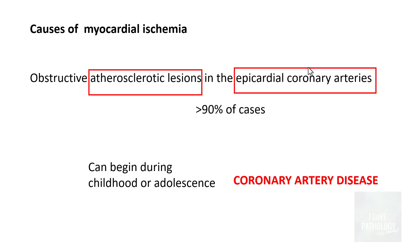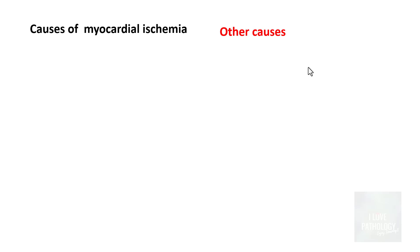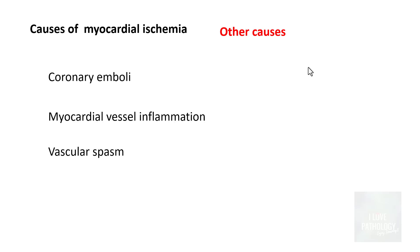Atherosclerotic lesions have been discussed in detail in earlier videos on atherosclerosis. Atherosclerosis can begin during childhood or adolescence, but IHD is a late manifestation of atherosclerotic disease. Apart from atherosclerotic obstruction, other causes include coronary emboli, myocardial vessel inflammation, or spasm of the myocardial blood vessels, constituting less than 10% of cases.